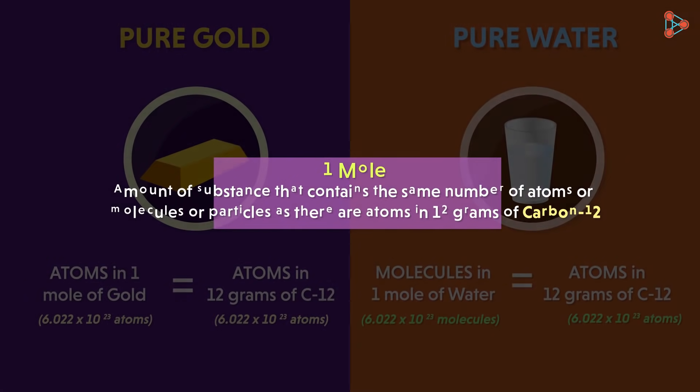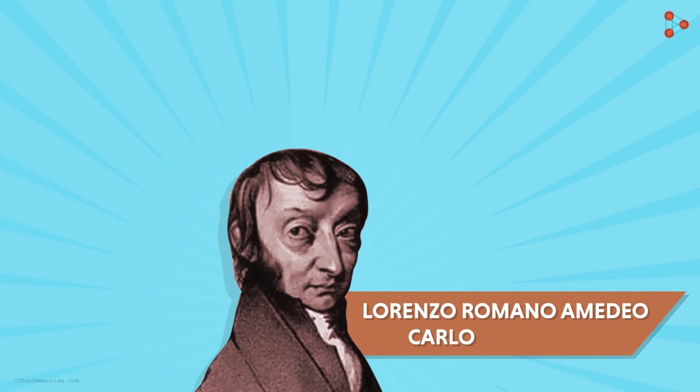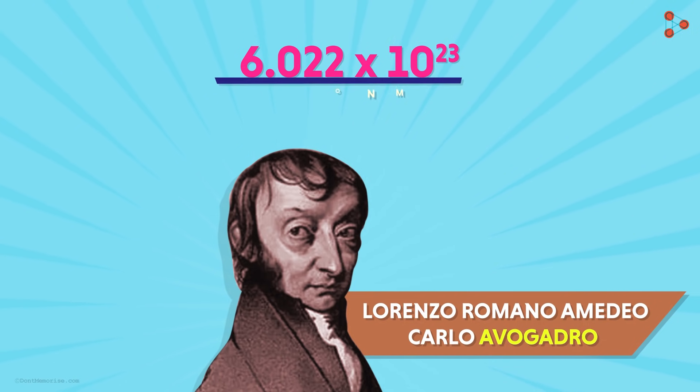But what's the mystery behind this number? A scientist named Lorenzo Romano Amidio Carlo Avogadro came up with this concept. I know the name is long, so we will address him as Avogadro. So the number 6.022 times 10 raised to 23 is called as the Avogadro's number.